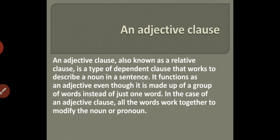What is an adjective clause? An adjective clause, also known as a relative clause, is a type of dependent clause that works to describe a noun in a sentence. It functions as an adjective even though it is made up of a group of words instead of just one word. In the case of an adjective clause, all the words work together to modify the noun or pronoun.